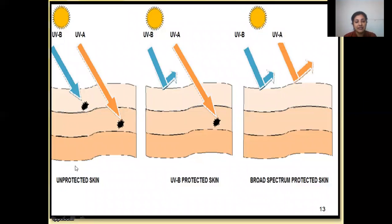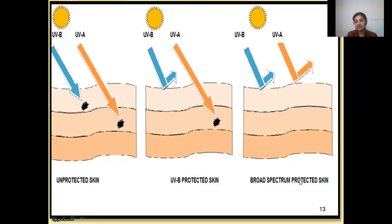This is a diagram depicting unprotected skin, where no sunscreen has been applied. In this case UVB rays enter the epidermis and UVA rays enter the dermis, causing harmful effects. On the other hand, in UVB-protected skin the UVB rays are blocked by using a UVB protectant. However, since a UVA protectant has not been used, UVA rays still penetrate deeper into the skin. The use of a broad spectrum photoprotective agent prevents from both UVB and UVA rays.